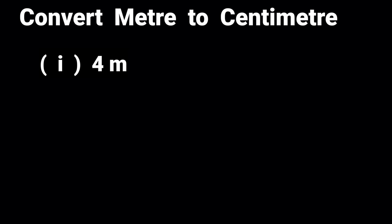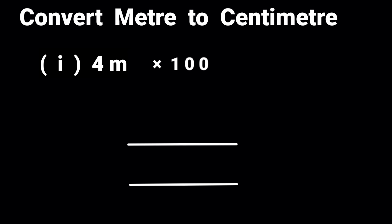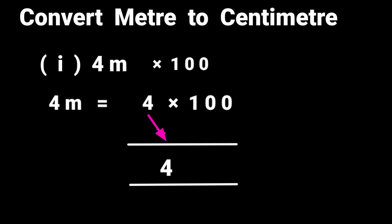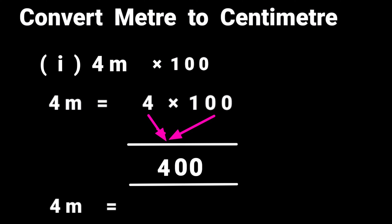The first sum is four meters. To change meters to centimeters, multiply by one hundred. Four cross one hundred: one fours are four, and any number multiplied by zero is zero, so we get zero and zero. Therefore, four meters is equal to four hundred centimeters.